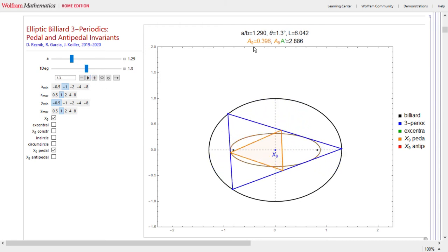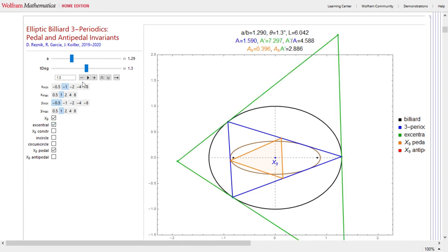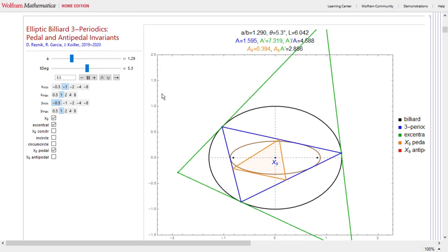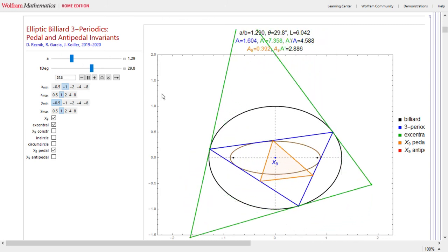So I can animate this pedal triangle and I can also look at its area. Turns out the area of this pedal triangle, denoted here by A9, multiplied by the area of the central triangle is invariant. This is neat, this is a new result.